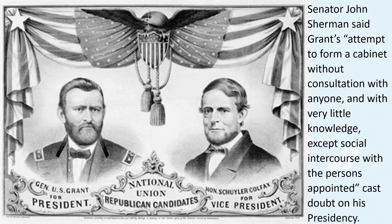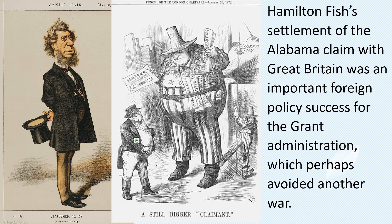Senator John Sherman said that Grant's attempt to form a cabinet without consultation with anyone, with very little knowledge except social intercourse with the persons appointed, cast doubt on his presidency. Although his appointment of Hamilton Fish as Secretary of State was seen as an excellent choice by both his contemporaries and historians, it started his feud with Senator Charles Sumner, chairman of the Foreign Relations Committee, who was upset that Grant did not consult with him on the appointment, in part because Sumner wanted that appointment himself. Grant tended to treat his cabinet members like military staff officers, often making decisions without conferring with Congress or his cabinet, and was not proficient at lobbying congressmen to persuade them to his point of view. Hamilton Fish's settlement of the Alabama claim with Great Britain was an important foreign policy success, and perhaps avoided war with Great Britain.